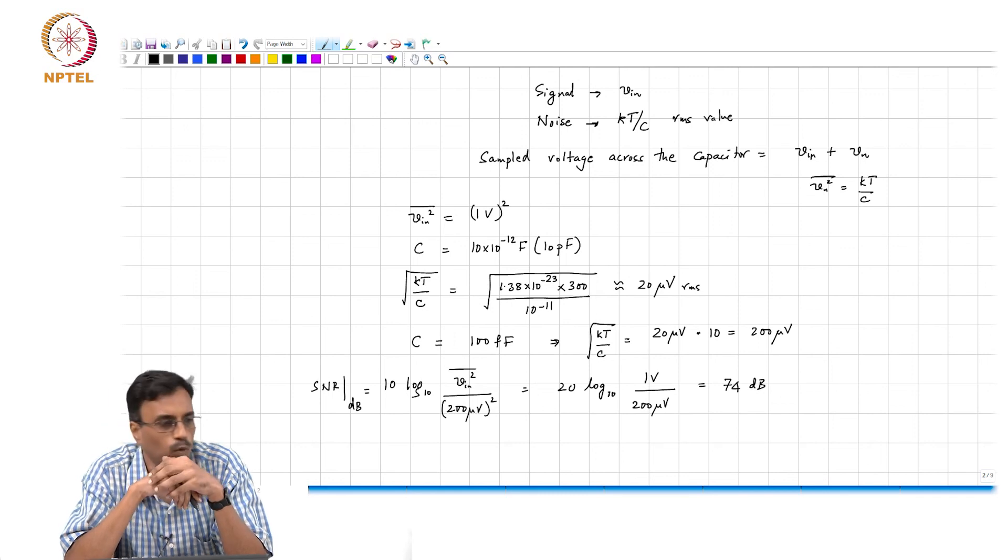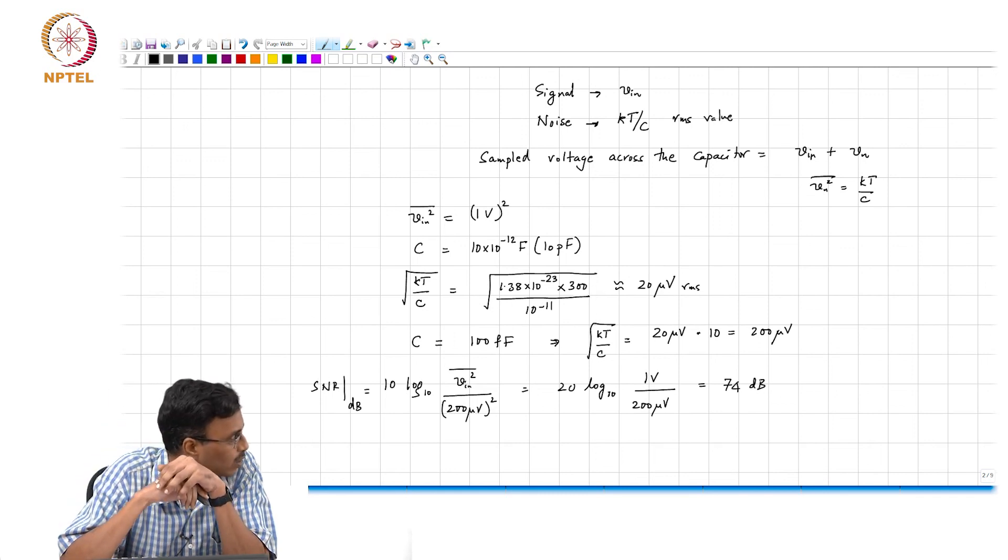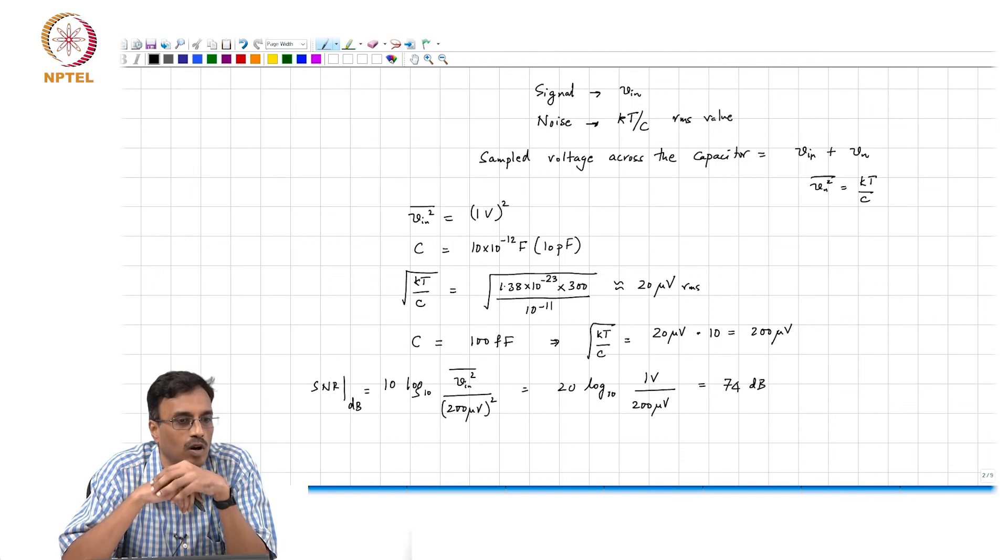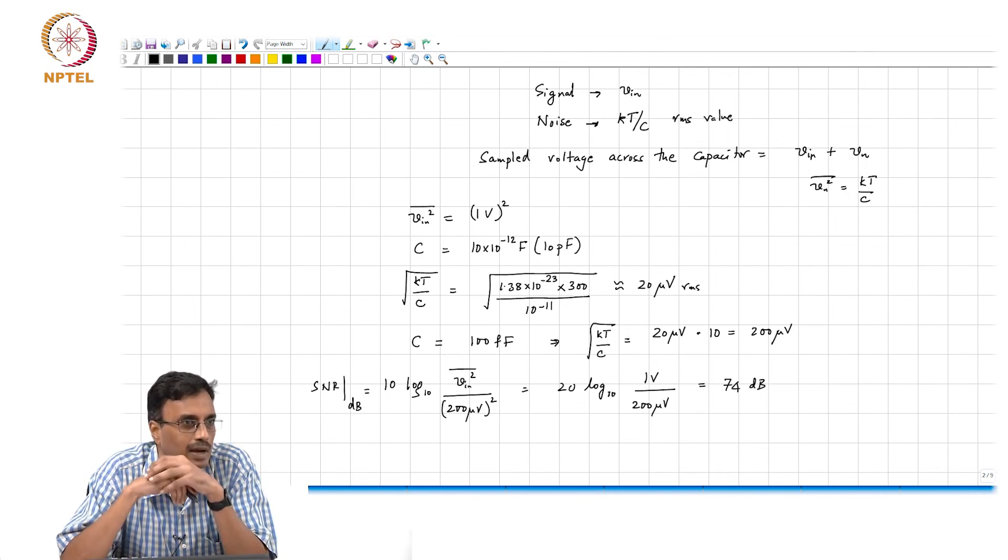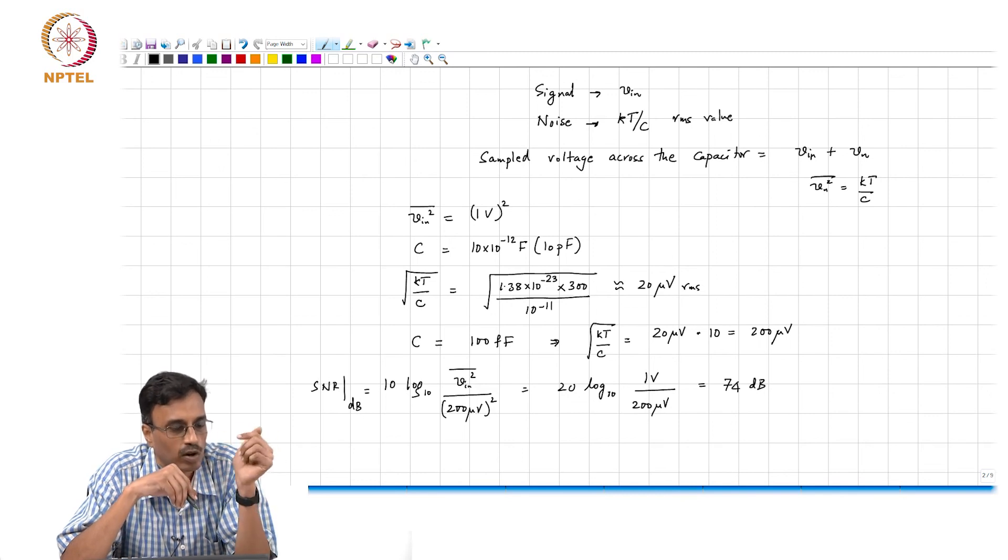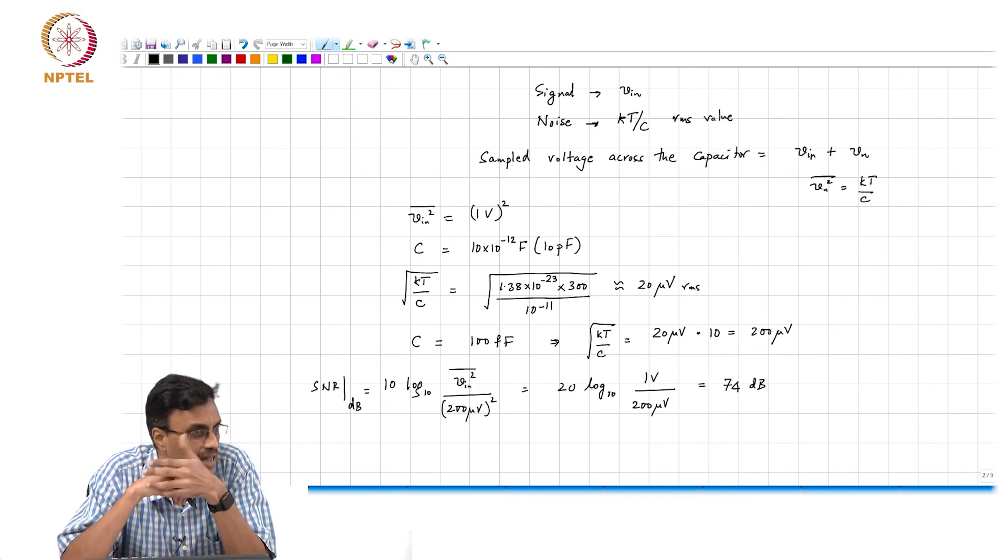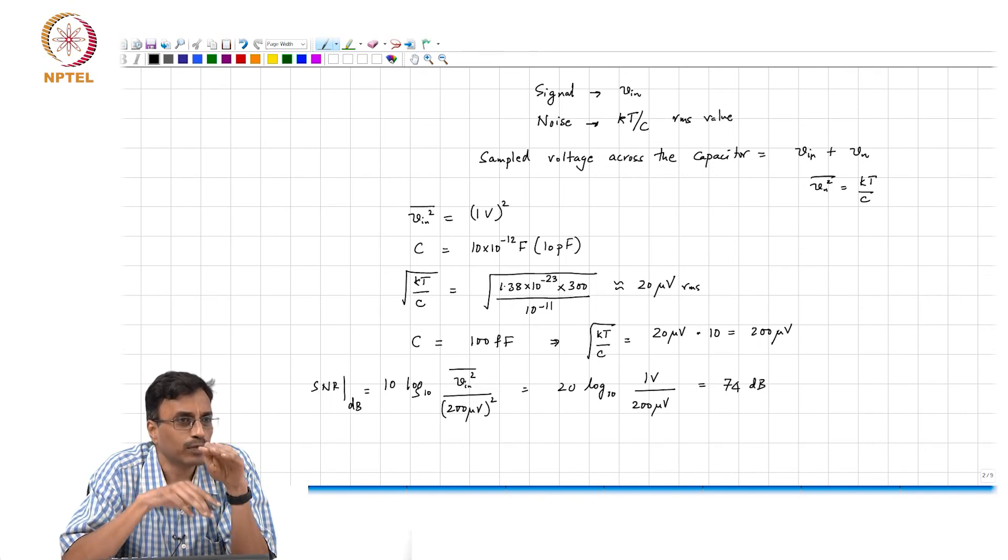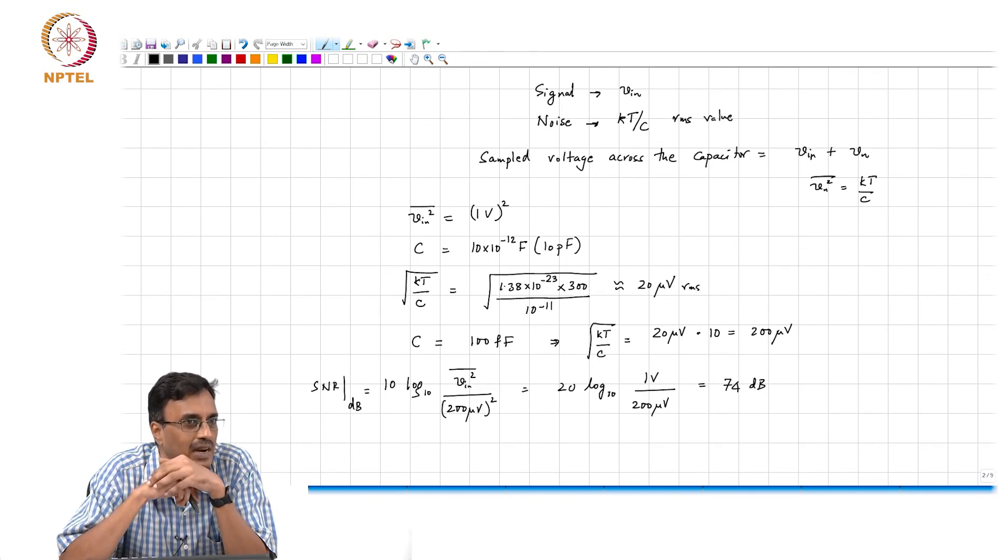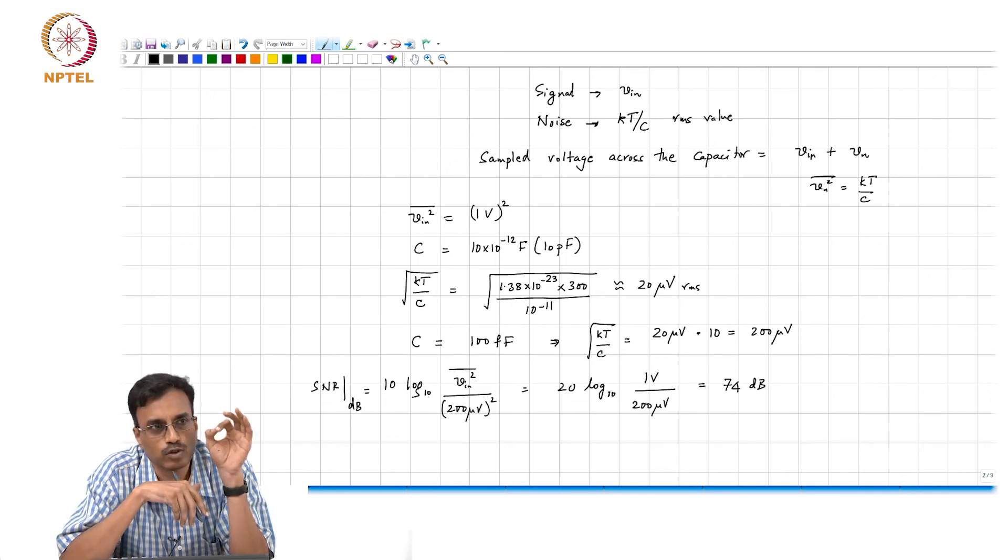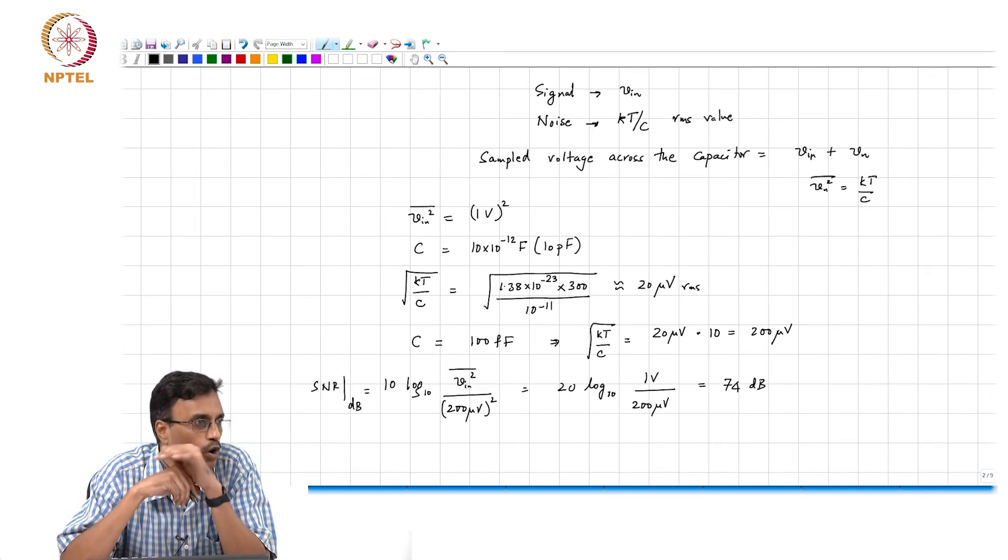What is the moral of the story? If you want to resolve or if you want to build a sampler or consequently an analog to digital converter with higher and higher resolution based on sampling the voltage on a capacitor using a switch, then you see that the value of that sampling capacitor better be sufficiently large, so that the error you make when you sample the input voltage onto that capacitor is way smaller than what you are trying to resolve.